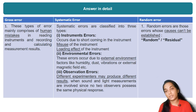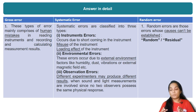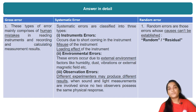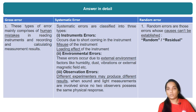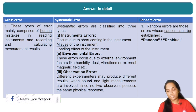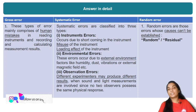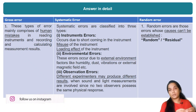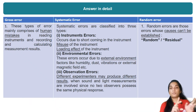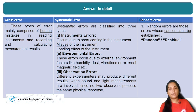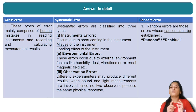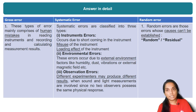Observational error occurs because different experimenters may produce different results. There is confusion between human-made errors and observational errors. If you have the same experimenter, the results may still differ based on skill and method of observation.